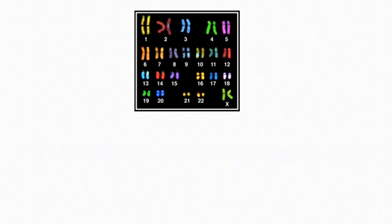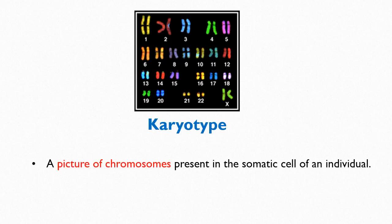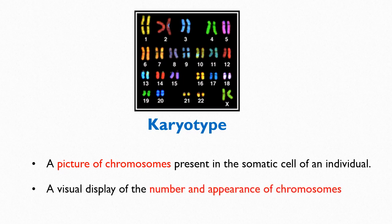You all must have come across this image somewhere in your books — it is a karyotype. Karyotype is a picture of chromosomes in the somatic cell of an individual. Karyotype represents the number and appearance of these chromosomes.